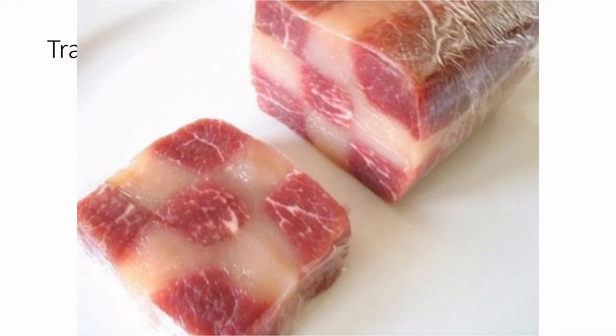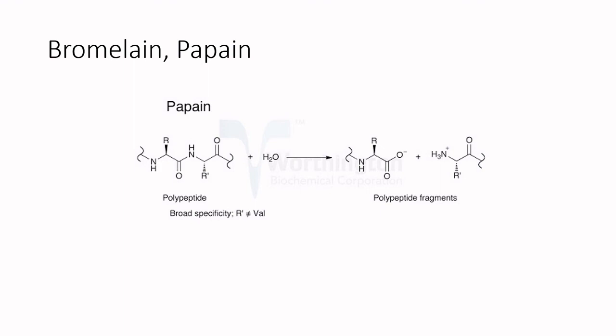Bromelain and papain are proteases — they take the polypeptides within proteins and break them down into polypeptide fragments. Bromelain is naturally found in pineapples and papain in papayas, but the isolated enzymes are commonly found in meat tenderizers. Sprinkle a small amount on and the enzymes will break down the fibrous proteins within stringy meats, creating a more tender product. Leave the enzyme on too long, however, and the meat gets dry and gritty when it cooks because all protein structure is lost.